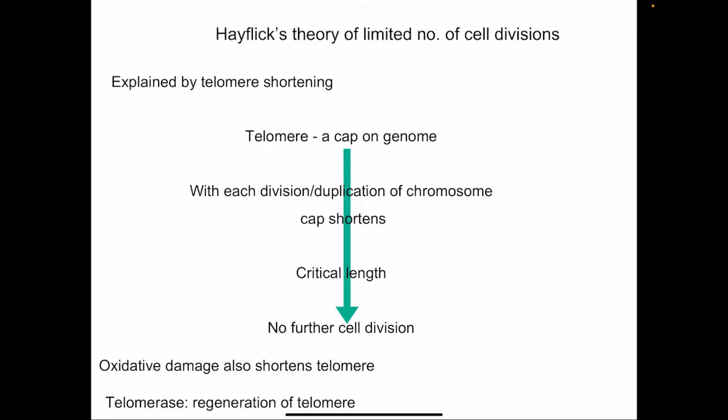Another is Hayflick's theory of limited number of cell divisions. It says that the number of divisions which a cell can have are limited. Suppose there is a cell which can undergo cell division 100 times. These 100 cell divisions can occur in less time, maybe 5 years, or in 7 years, depending on how fast cells are proliferating. Why is it limited to only 100 times? That's because there is a cap on the genome known as telomere, and this cap doesn't duplicate. Every time the cell is proliferating, DNA undergoes duplication, but this end part of this cap doesn't duplicate. After 100 times, there will be no cap on the genome and the genome will wither out.